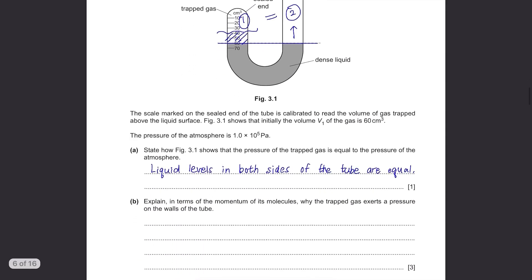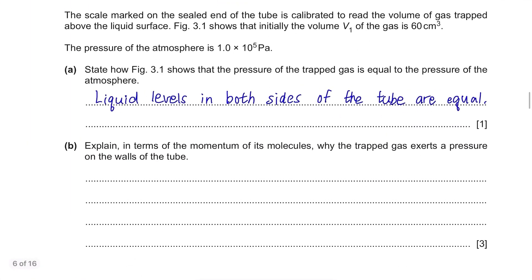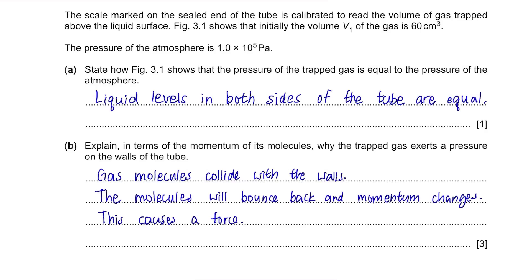Part B. Explain in terms of the momentum of its molecules why the trapped gas exerts a pressure on the walls of the tube. We know that gas molecules always move around and eventually collide with the walls. When they collide with the walls of the container, their direction will be reversed as they bounce back. This will change the momentum of molecules and change in momentum causes a force. This force will then spread out on the walls of the tube, producing pressure.